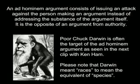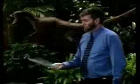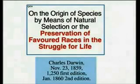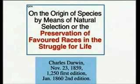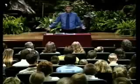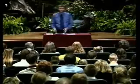Please note that Darwin meant 'races' to mean the equivalent of species. Charles Darwin wrote a book, and the title of the book was: The Origin of Species by Means of Natural Selection, or the Preservation of Favored Races in the Struggle for Life. Charles Darwin was a racist — his evolutionary philosophy was inherently a racist philosophy.